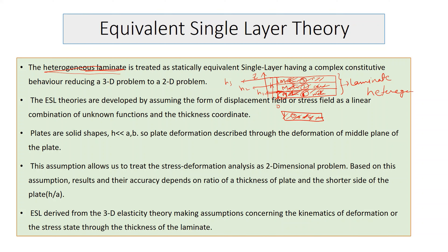Homogeneous material is independent of position, whereas a heterogeneous laminate has material properties that depend on position. Here we are talking about thickness-direction heterogeneity: as the z coordinate changes, the material properties change. Therefore it is a heterogeneous laminate, and it is treated as a statically equivalent single layer.